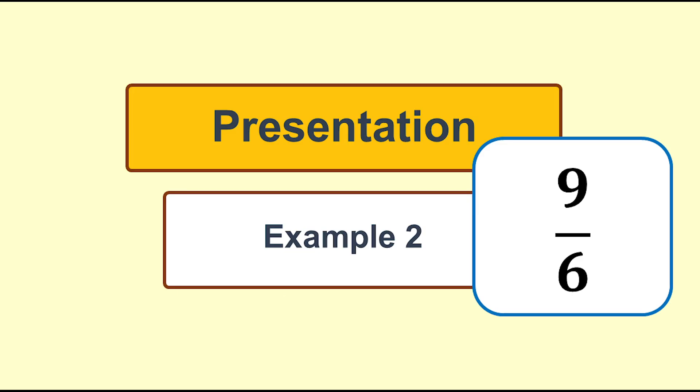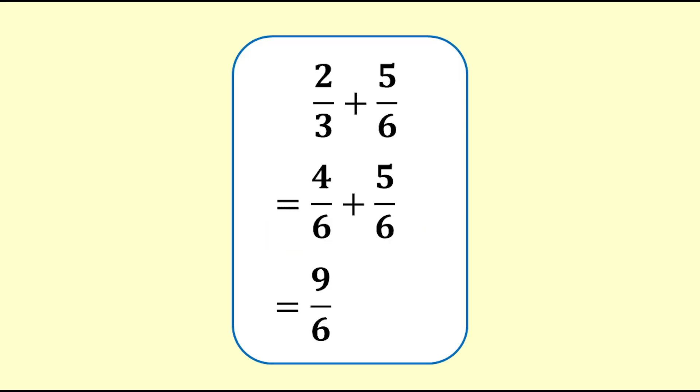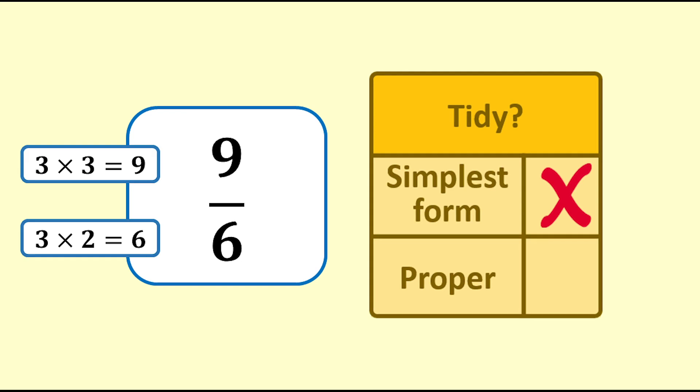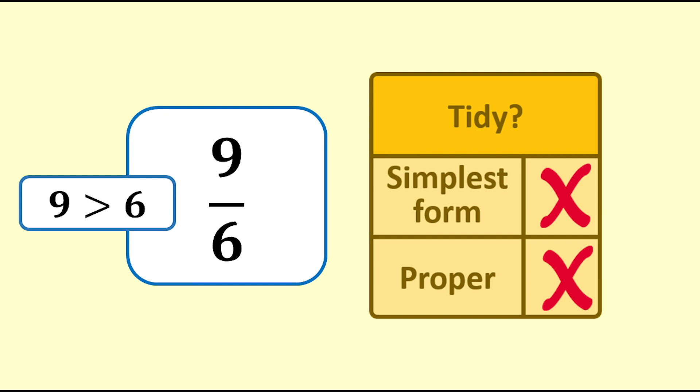Here is another example of tidying up. 2 thirds plus 5 sixths equals 9 sixths. Is 9 sixths tidy? No, it is not in simplest form as 3 goes into 9 and into 6. And it is an improper fraction as 9 is greater than 6.